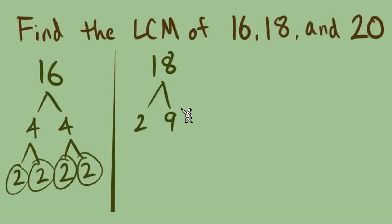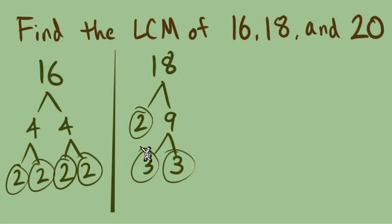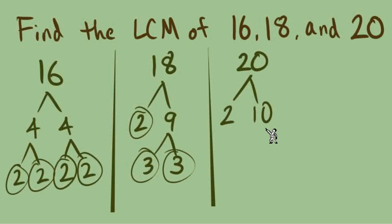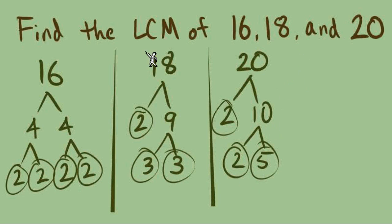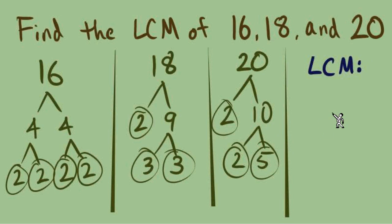Next, 18: that's 2 times 9. The 2 is prime. 9 is 3 times 3, so two more primes. Prime factors: 2, 3, 3. And finally, 20 is 2 times 10; the 2 is prime. 10 is 2 times 5, and both are prime. So we have prime factors in three different trees. The rules for building the LCM are still the same — use all different factors (2s, 3s, and 5s), and choose them based on where we see the most.